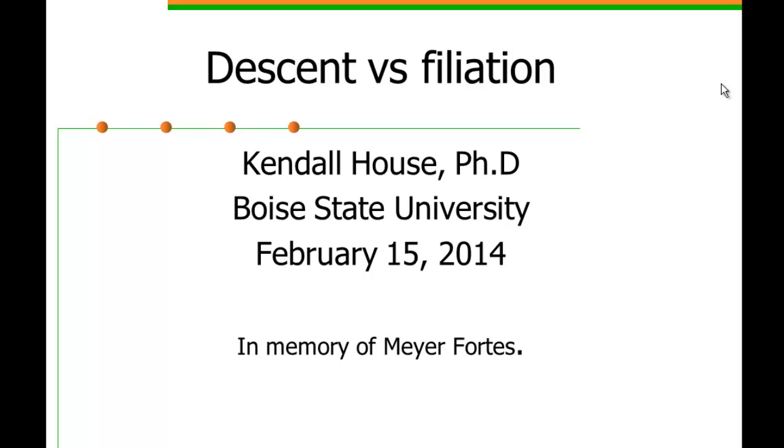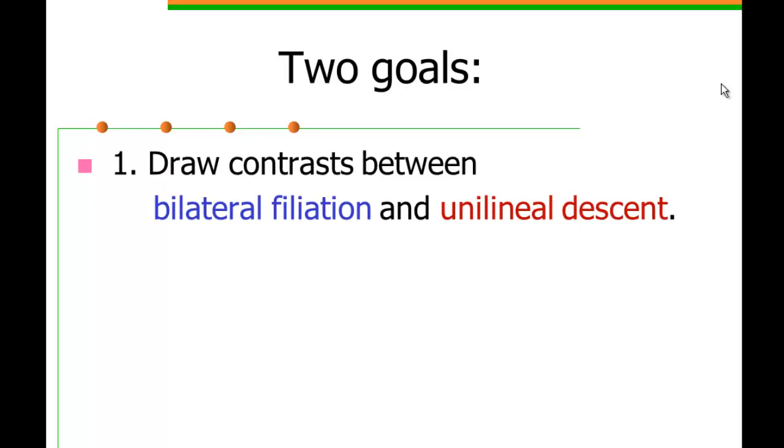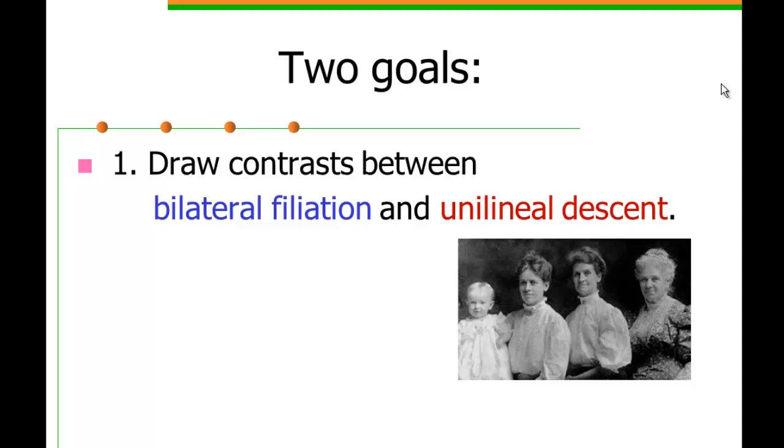So we have two goals for this presentation. First we're going to draw a contrast between bilateral affiliation and unilineal descent. So unilineal descent is tracing ancestry primarily through one gender for social purposes, especially corporate group formation.